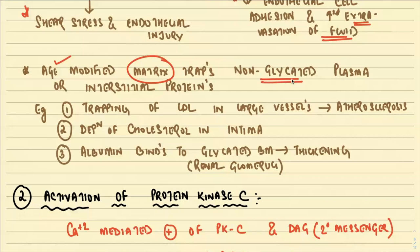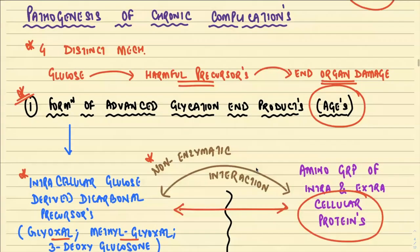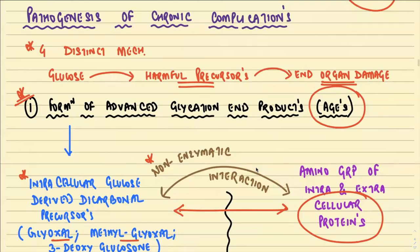The AGE-modified extracellular matrix also traps non-glycated plasma and interstitial proteins. For example, it traps LDL in large vessels, accelerating atherosclerosis and causing cholesterol deposition in the intima. Albumin binds to the glycated basement membrane especially in the renal glomerulus, leading to further thickening. This is the first and most important pathogenesis of chronic complications — the formation of advanced glycation end products.